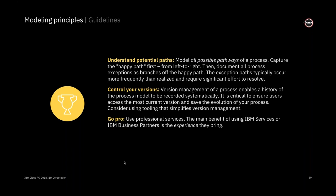When modeling a process, it's important to understand all the possible pathways or gateways. My preference is to capture the happy path first — from left to right — which means documenting how the process goes if everything goes perfectly with no exceptions. Once you have that documented, go back and add in the other exception paths, because exception paths often occur more frequently than realized and require significant effort to resolve. The goal is to ensure that most of the flow goes through the optimal path, and there's no way to really understand that until you model it and look at the exceptions.